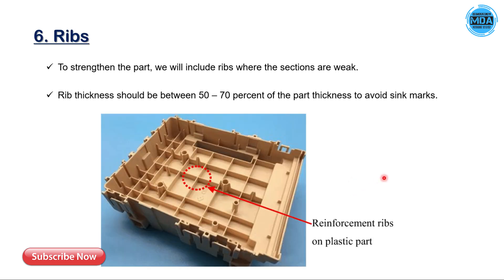Our next factor is ribs. Suppose we design the part with minimum wall thickness — it may not be as strong as a thicker part. For strength, we might want to increase the thickness, but we need to maintain minimum wall thickness. In this case, we will not increase the complete part thickness. Instead, we will include ribs only where sections are weak, to add strength to those areas without increasing the overall part thickness and material weight.